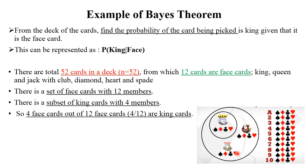So we have: n equals 52 total cards, 12 of which are face cards, and 4 of those are king cards. The ratio is 4 out of 12. Now we need to put this information into the Bayes' theorem formula to calculate the required probability.